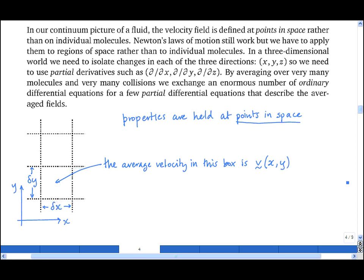Similarly, the average velocity in the box just above has a value given by the velocity at the first box xy, plus the partial derivative dv by dy, where v is a vector, keeping x constant times the distance moved in the y direction, delta y. And this is a partial derivative.